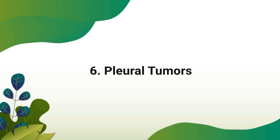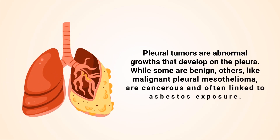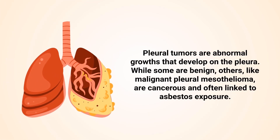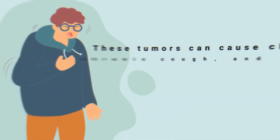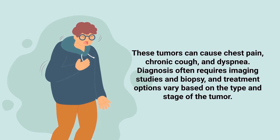Pleural tumours are abnormal growths that develop on the pleura. While some are benign, others like malignant pleural mesothelioma are cancerous and often linked to asbestos exposure. These tumours can cause chest pain, chronic cough, and dyspnea. Diagnosis often requires imaging studies and biopsy, and treatment options vary based on the type and stage of the tumour.